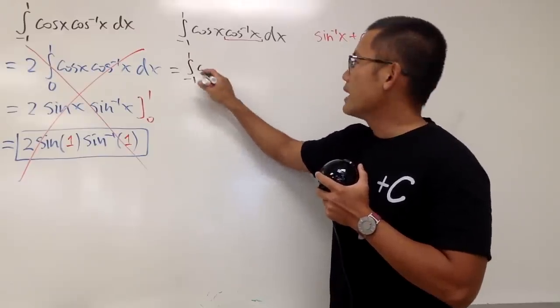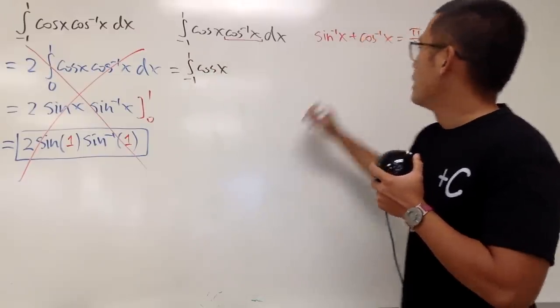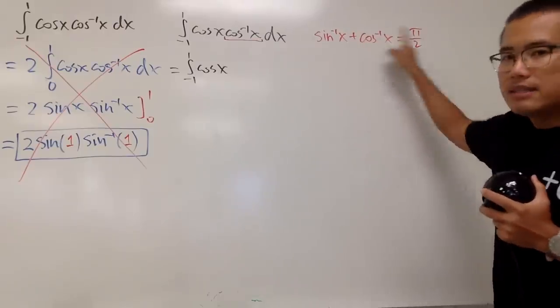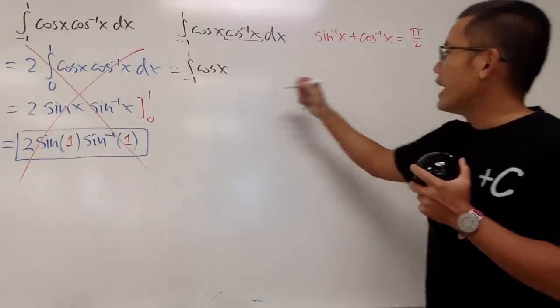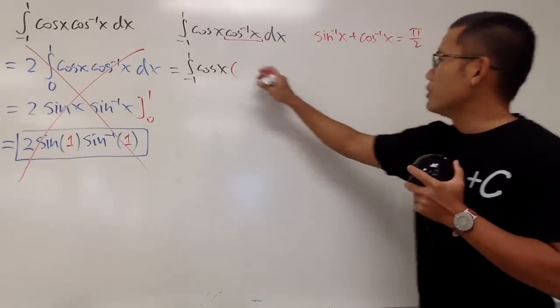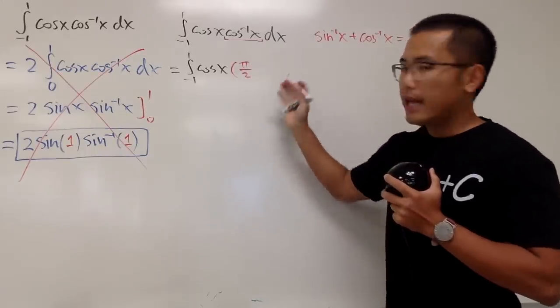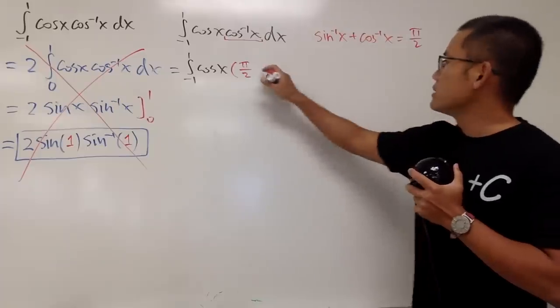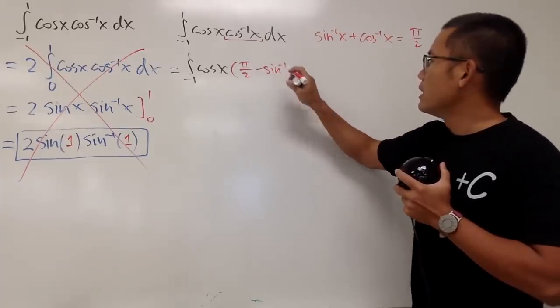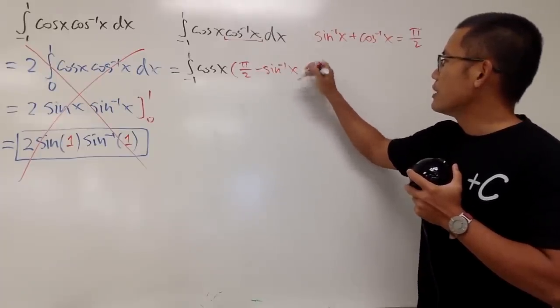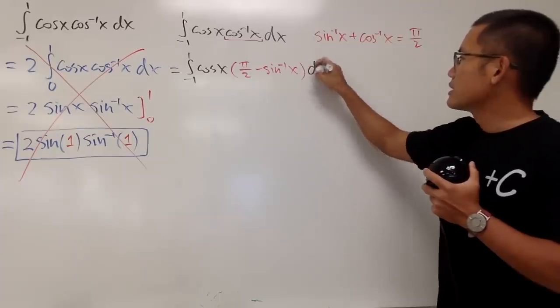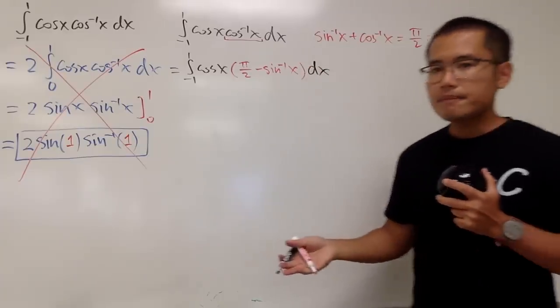Here we go. Let's put this down as integral from negative 1 to 1, and we have cos x. This part, well, let me just minus this on both sides, so we get π over 2, and then we will have the minus the inverse sine of x. So this right here is good, dx. And now, let's do this.